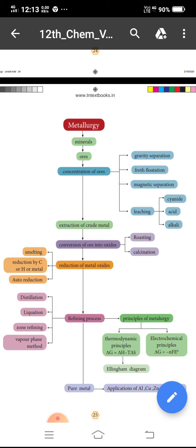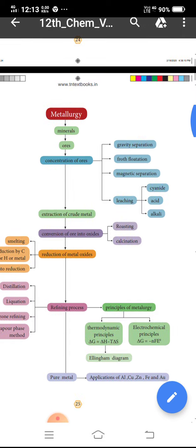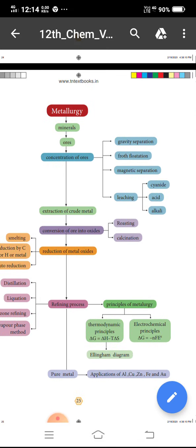Refining process gives pure metals. Application of pure metals: Aluminium, copper, zinc, iron.